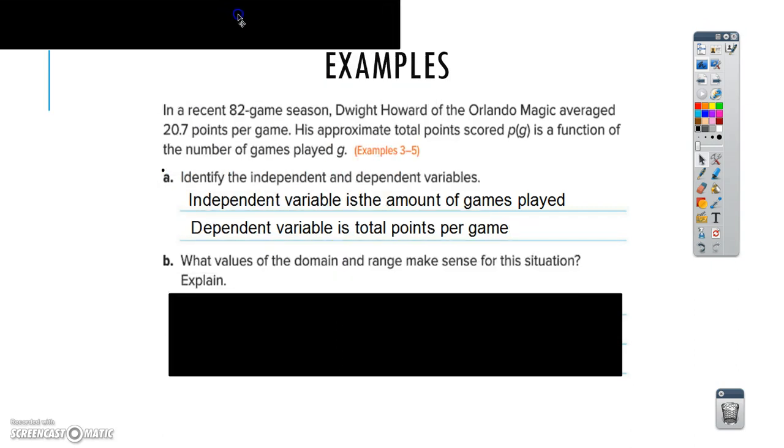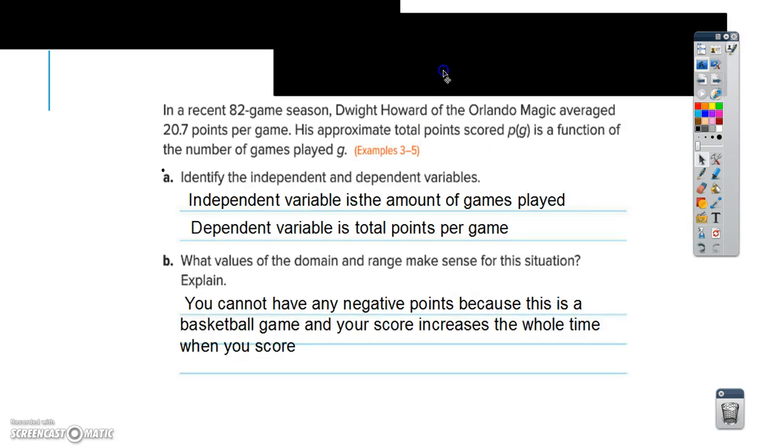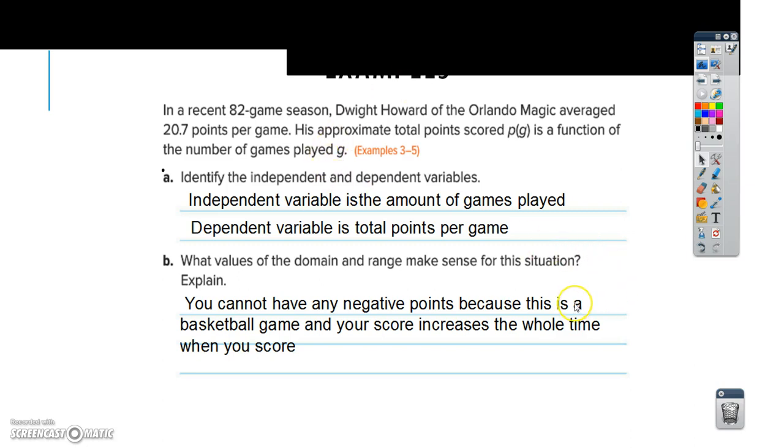If you remember the charts that we showed you in the last example, you can also set it up that way, which would be your dependent variable is X and your independent variable is Y. For your second question, what values of the domain and range make sense for this situation? So, you cannot have any negative points because this is a basketball game, and your score increases the whole time when you score. So, what this means is that either way it goes, you're going to have points, but it'll never be negative. If you don't make a score, it will always be zero, but every time you score, your count goes up and not down.